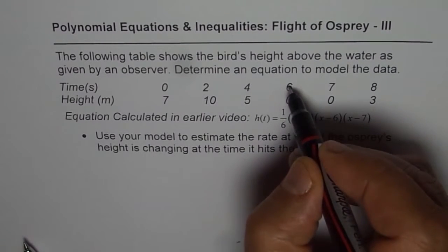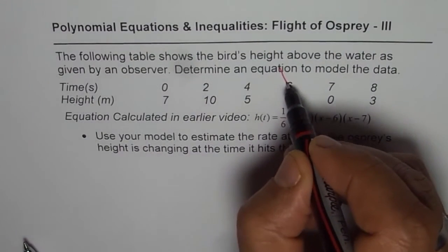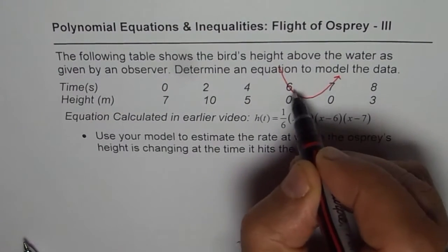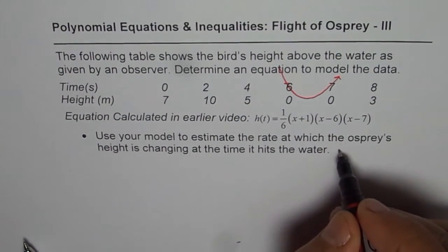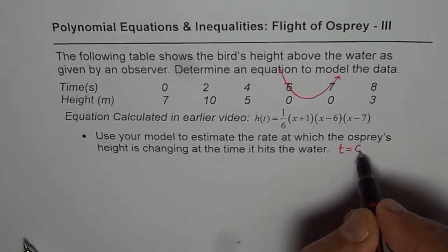Now, from the data, we know it hits the water at this time. So it just hits and then comes out of the water like this. So it is at t equals 6. The time is t equals 6.